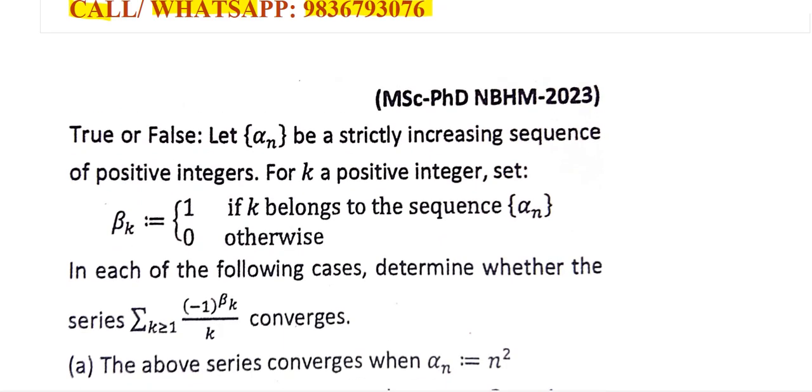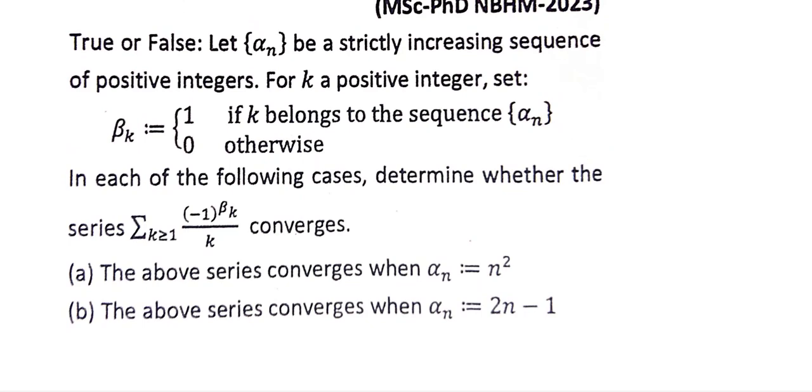What is the question? This is a true-false based statement question. Let alpha n be a strictly increasing sequence of positive integers. For k a positive integer, set beta of k that defines 1 if k belongs to the sequence of alpha n and 0 otherwise. In each of the following cases, determine whether the series summation k greater than or equal to 1 of minus 1 to the power beta k divided by k converges.